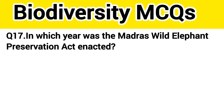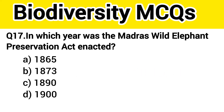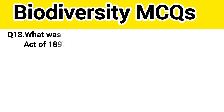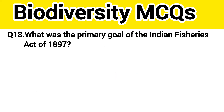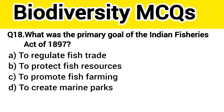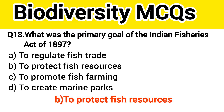Question number 18. In which year was the Madras Wild Elephant Preservation Act enacted? Question number 19. What was the primary goal of the Indian Fisheries Act of 1897? The right answer, option B: To protect fish resources.